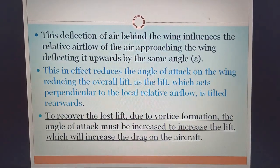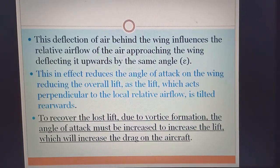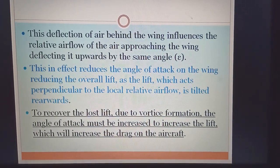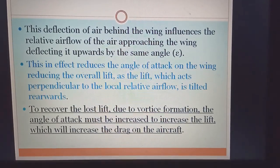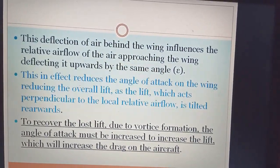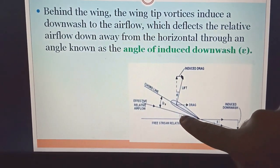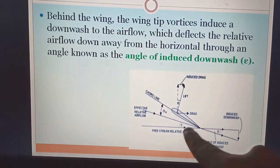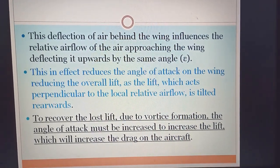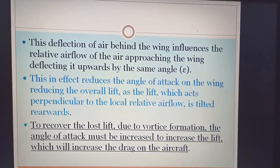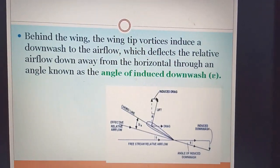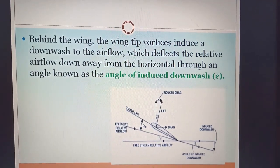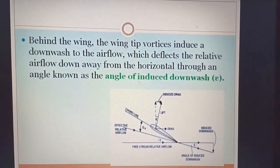The deflection of air behind the wing influences the relative airflow approaching the wing, deflecting it upward by the same angle epsilon. This in effect reduces the angle of attack on the wing and reduces the overall lift, as the lift acts perpendicular to the local relative airflow and is tilted rearward. The downwash angle represents the angle between the horizontal line and the relative airflow, and this causes the lift vector to tilt.